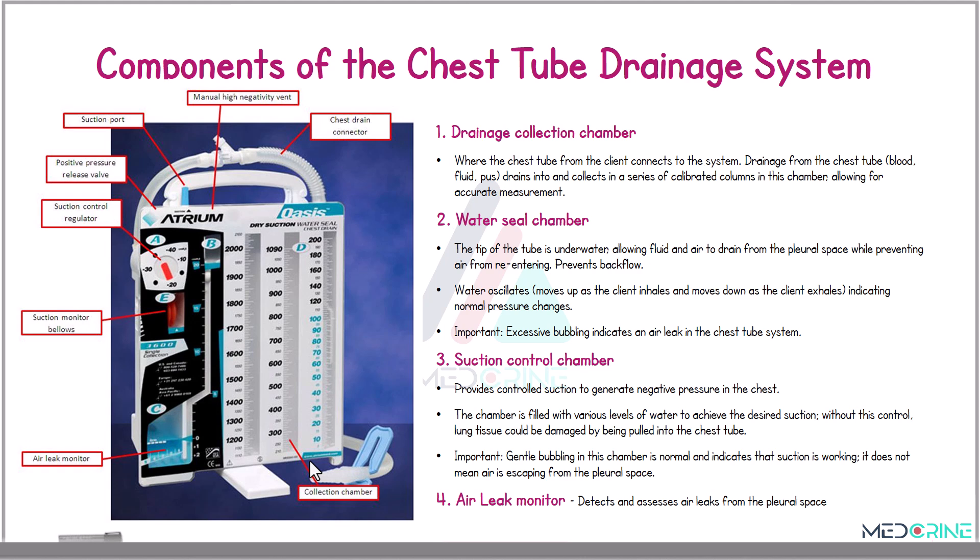The second component is the water seal chamber. The tip of the tube is underwater, allowing fluid and air to drain from the pleural space while preventing the re-entry of air and fluid back into the pleural space. In this chamber, water oscillates by moving up as the client inhales and moving down as the client exhales, indicating normal pressure changes.